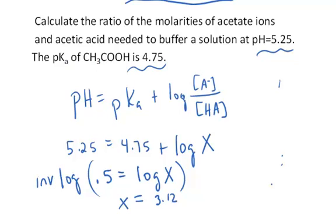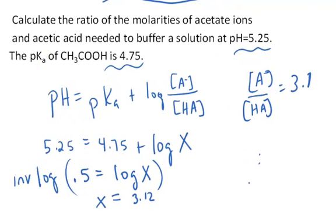So since x is the ratio of the anion to the acid and it's equal to 3.12, then what that's telling me is that I need to prepare a buffer in which I have 3.12 times more of the anion than the acid.